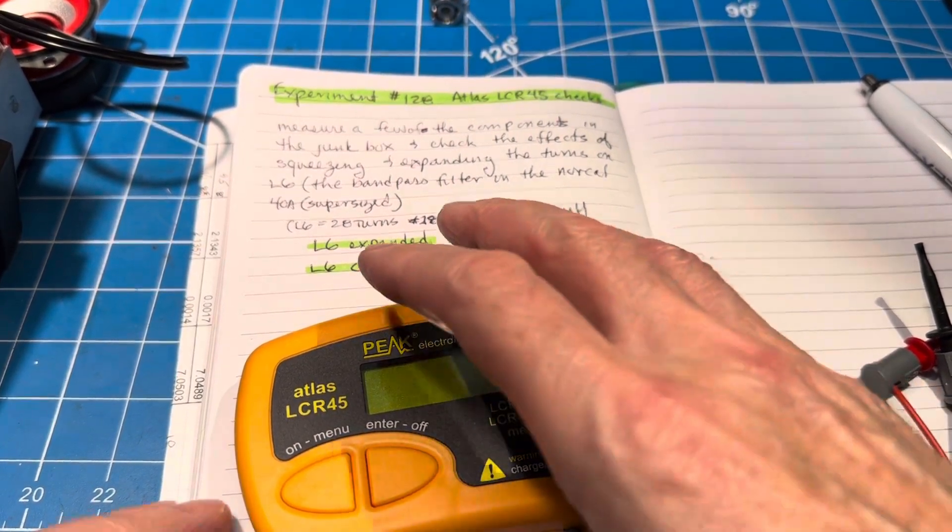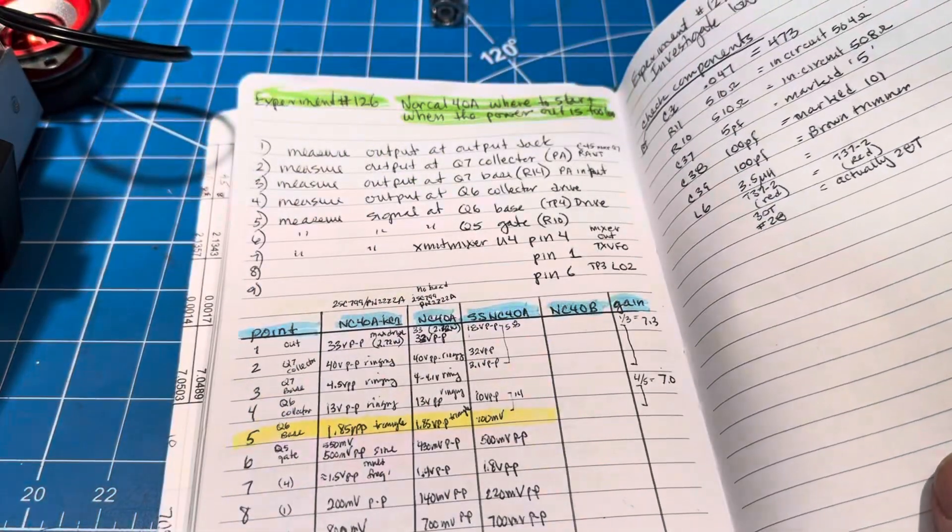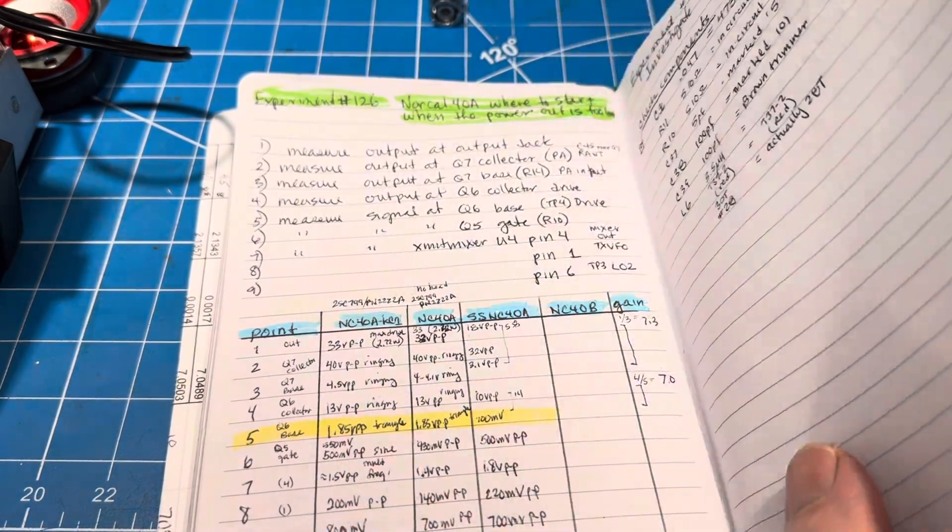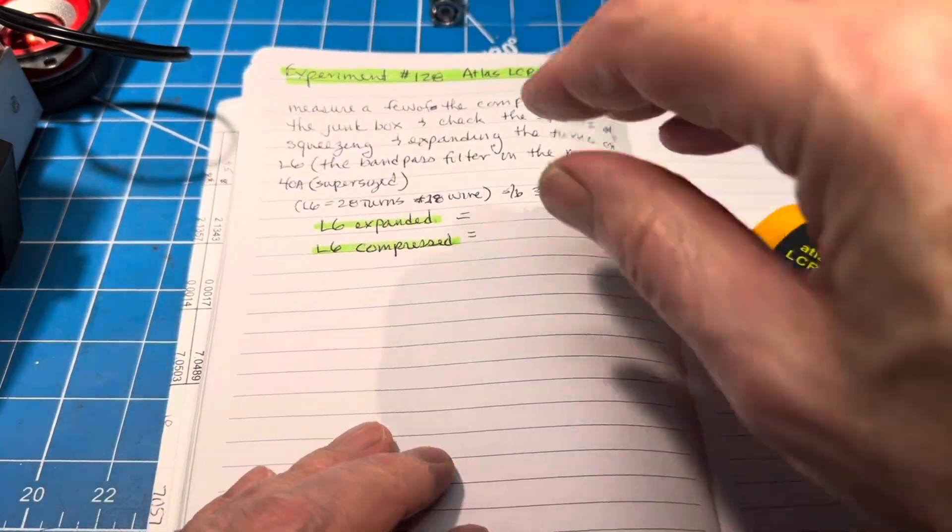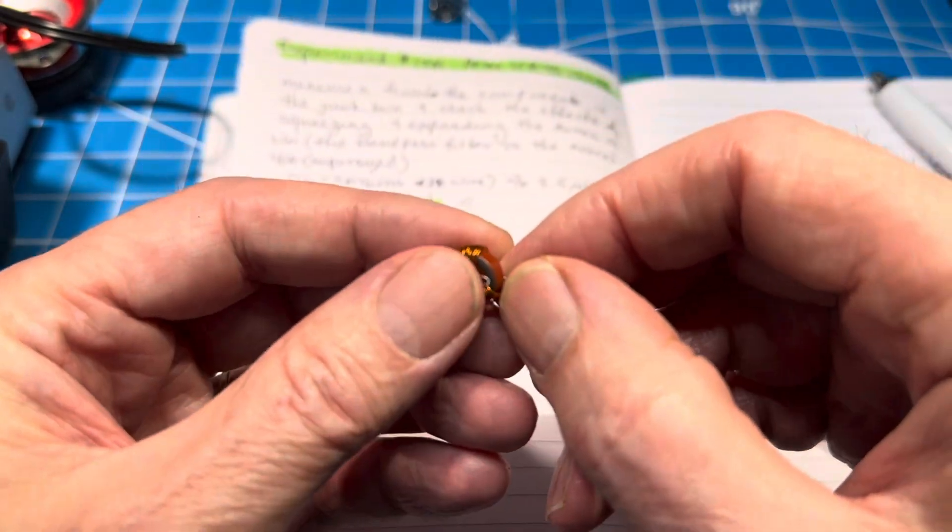This is a follow-up but kind of a sidetrack. If you remember, we were looking at the bandpass filter in the NorCal 40a. I had checked a few components and then was going to check L6 to see what we were up against, because one manual says 28 turns, the other said 30, but it did say 3.5 microhenry.